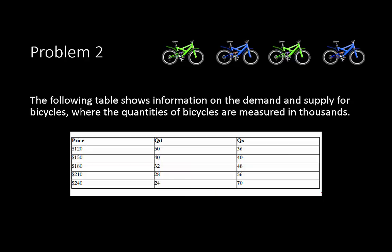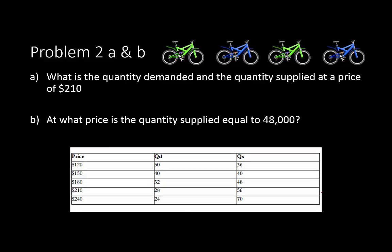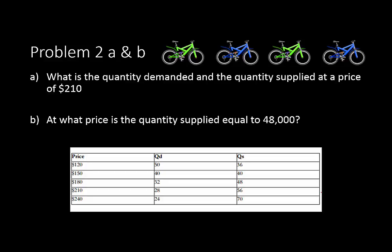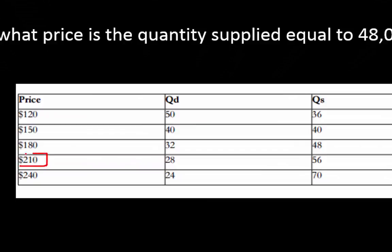In problem 2, the setup involves a table showing information on the demand and supply for bicycles, where the quantities are measured in thousands. What is the quantity demanded and quantity supplied at a price of $210 per bicycle? We can just look right here — the quantity demanded is 28,000 and the quantity supplied is 56,000.